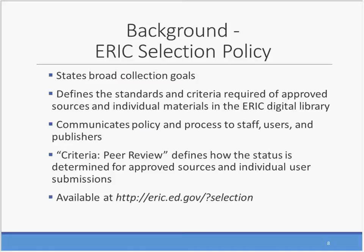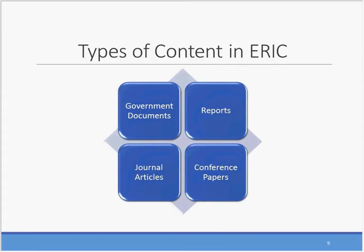The peer review policy is one selection criteria of the ERIC selection policy. The selection policy states broad collection goals and defines the standards and criteria required for a journal, or a center, agency, or individual materials to be indexed in the ERIC digital library. The current peer review policy states which content can be flagged as peer reviewed and how this status is determined. You can find the complete selection policy by using the selection policy link at the bottom of any ERIC website page and then click the PDF link to view or download the document. Since ERIC was founded over 50 years ago, it has been unique in that it indexes both journal articles and gray literature such as government documents, conference papers, and reports.